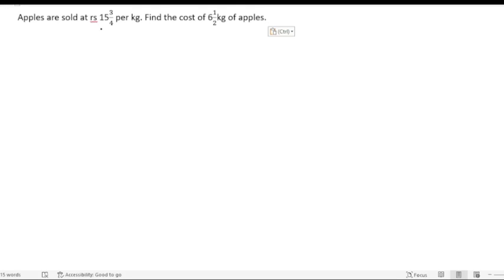Apples are sold at rupees 15 and 3/4 per kg. Find the cost of 6 and half kg of apples. They have given the apples cost for 1 kg. We have to find out what will be the cost for six and half kg. So let us start. First we will write down what they have given.